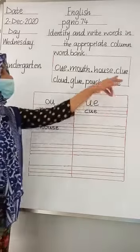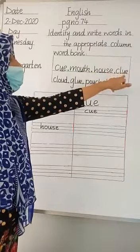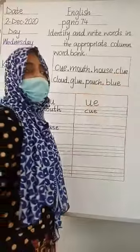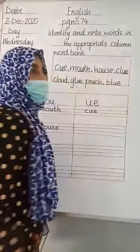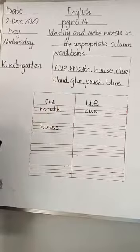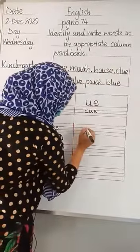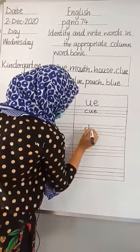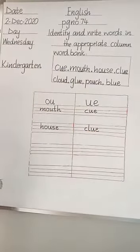Now come to the next word. The next word is C-L-U-E, 'clue'. Look at the word 'clue'. The word 'clue' has a U sound. So we write the word 'clue' in the column of U sound because it has U sound. C-L-U-E.